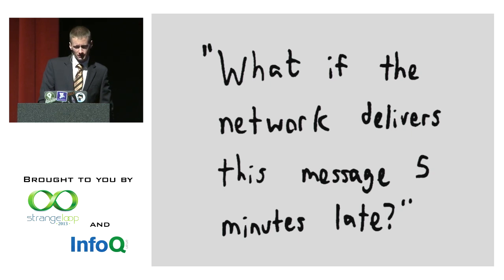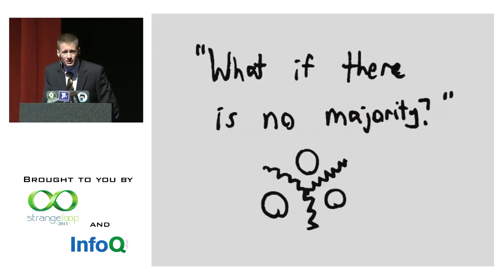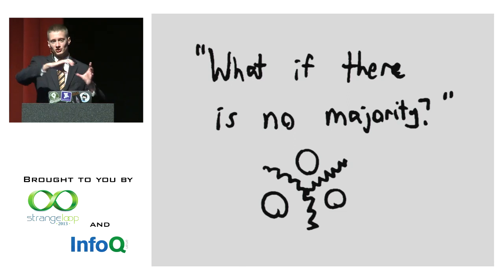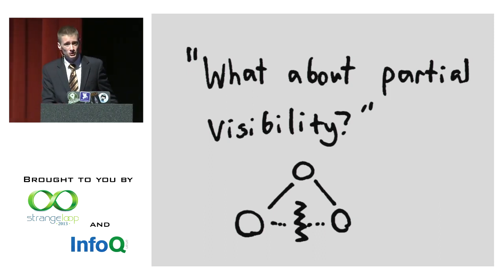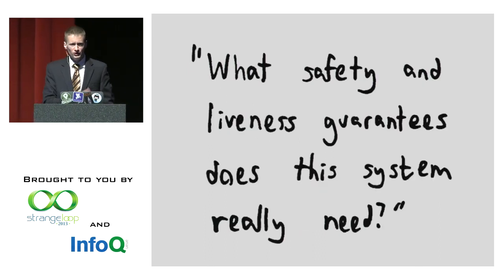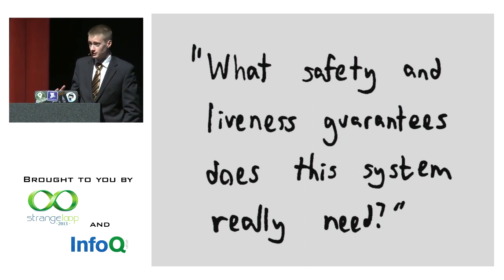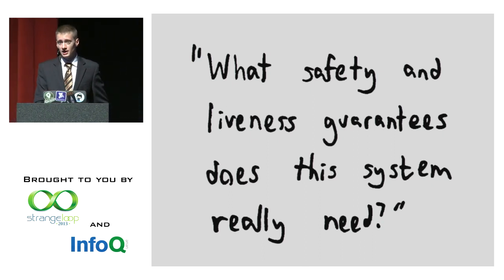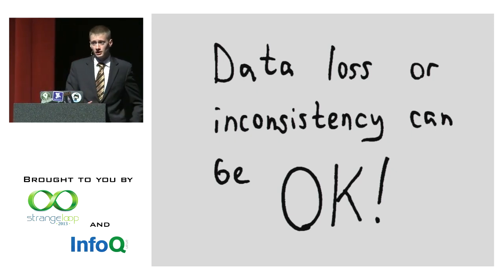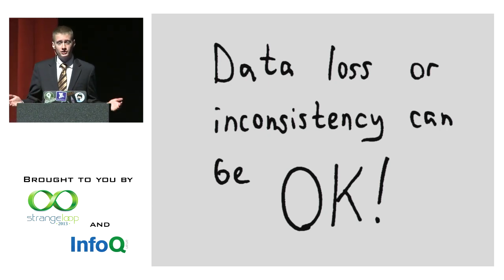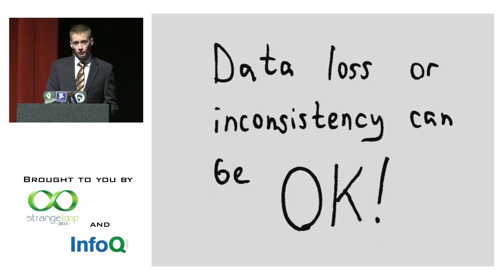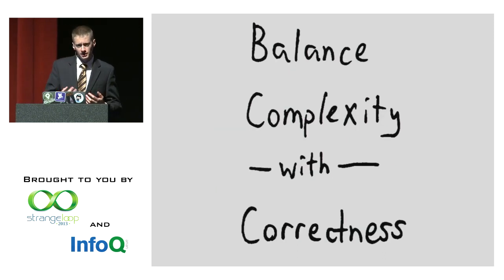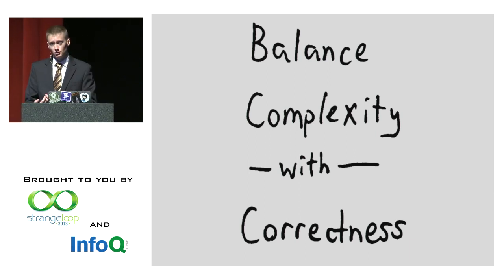Ask: what happens if a network delivers a message late? What if there's no majority, or the majority is on the opposite side or keeps shifting? What if you can see two different nodes but they can't see each other? This happens in EC2 all the time. Ultimately, you need to define the liveness guarantees and the safety guarantees your system actually needs. Losing data can be okay. Inconsistency can be okay — Cassandra can be a phenomenal place to store log-oriented data where inconsistencies never matter.